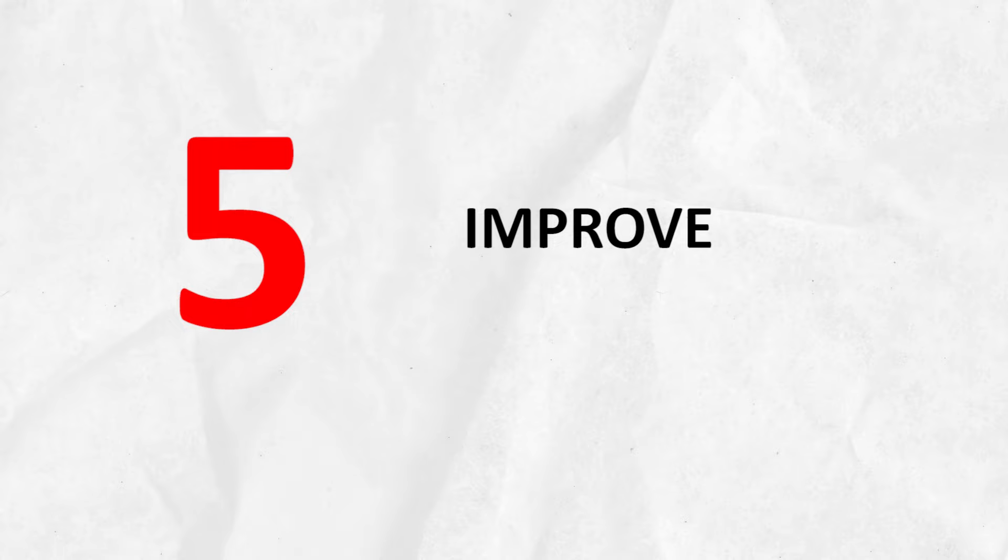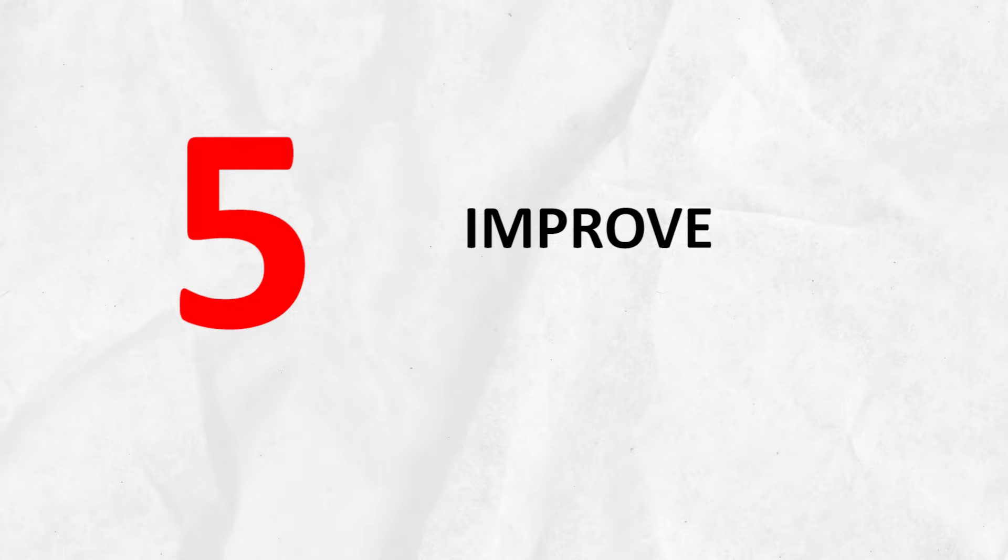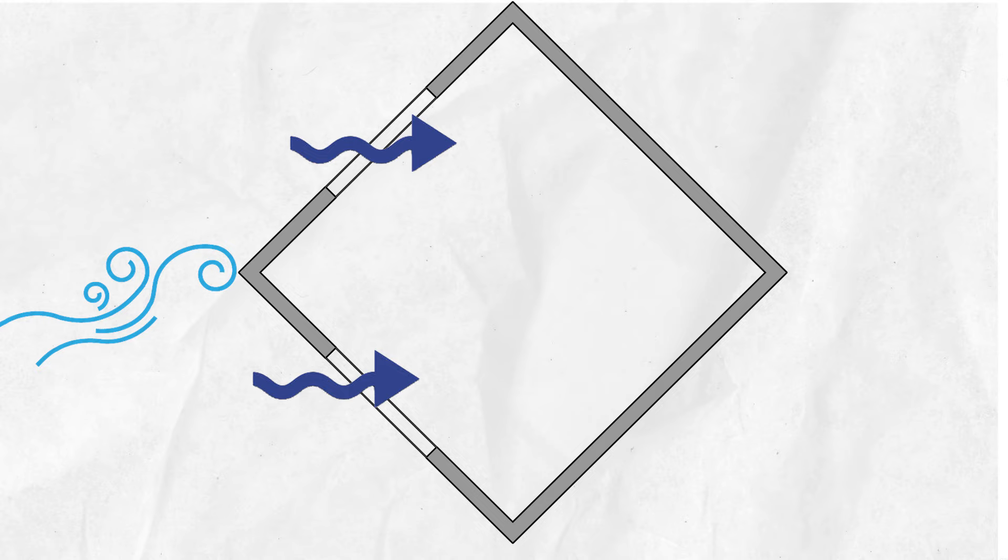Here are five ways to improve natural ventilation in your home. First, orientation: the house should be oriented on a site to take advantage of the prevailing breeze. The pressure can be increased on the windward side of a building by placing it at 45 degrees. Also, larger openings should be provided in the windward direction.